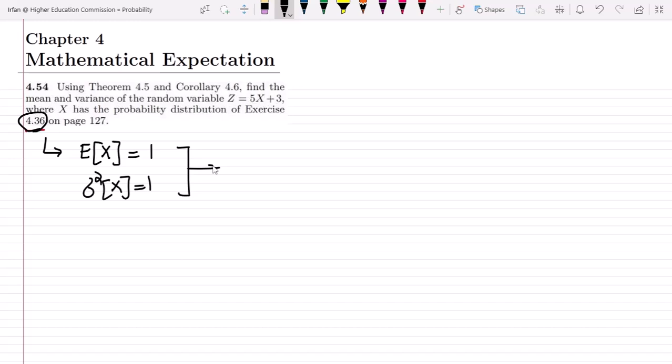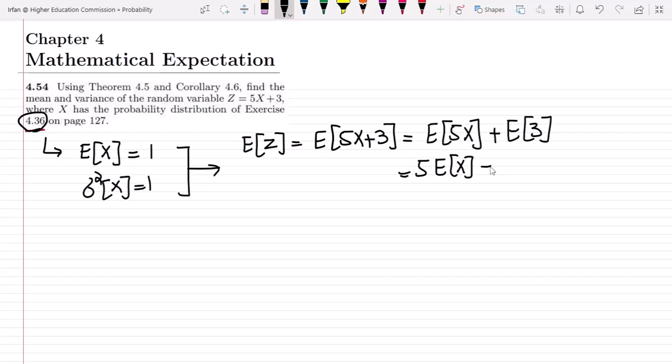Now, to find the expected value of Z, it would be the expected value of 5X plus 3, which equals the expected value of 5X plus the expected value of 3, because of the linear nature of expectation. This multiplicative term comes outside, so it becomes 5 times the expected value of X plus 3.